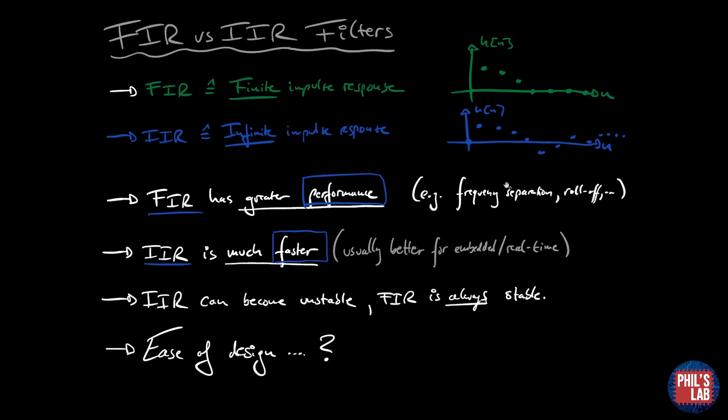In terms of performance and speed FIR has greater performance, it can separate frequencies better with steeper roll-offs and so forth, however it is a lot more power hungry than an IIR filter. An IIR filter is much faster to implement and run on an embedded real-time system. Another point to note is for higher order IIR filters these can become unstable whereas an FIR filter is always stable.